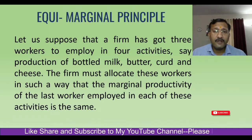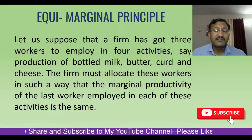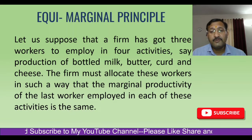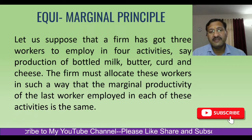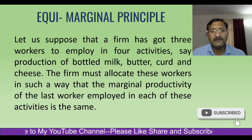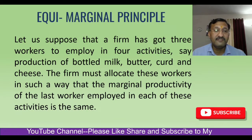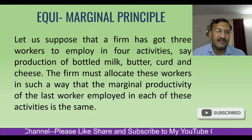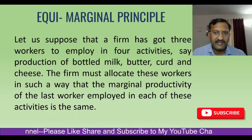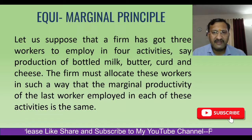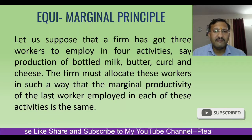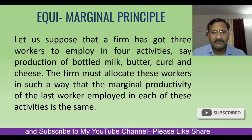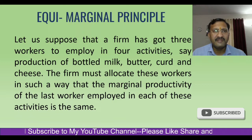So the firm must allocate these workers in such a way that the marginal productivity of the last worker employed in each of these activities is the same. That means you have to put all these three workers in all these four activities in such a manner that their marginal productivity is equal — it is the same in all activities.